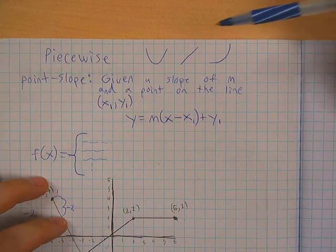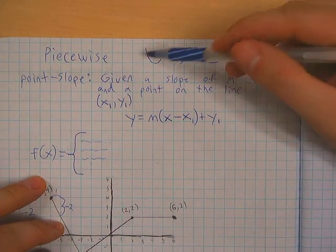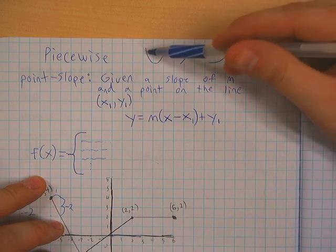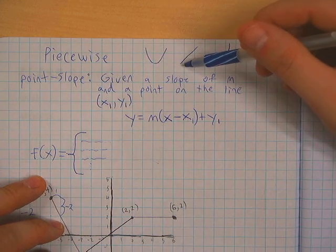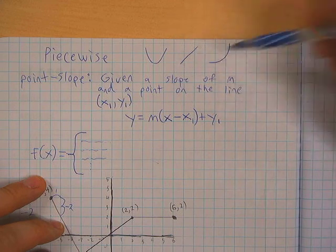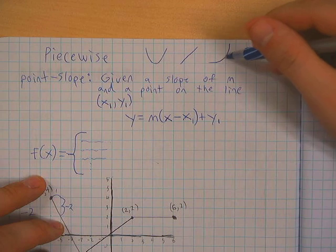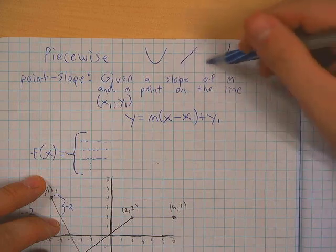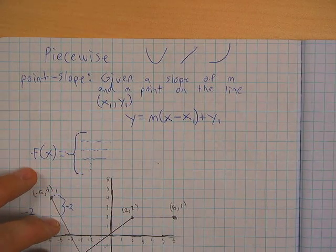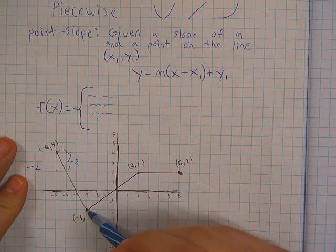In today's video we're going to be talking about piecewise functions. Most of the functions you've seen up to now are either quadratics, in which case it's a parabola, a linear function, or an exponential function, in which case your graph is an exponential curve. Notice those two are not the same — just to emphasize that.